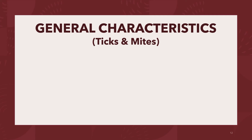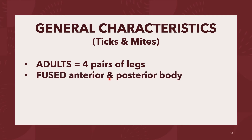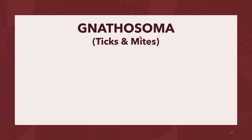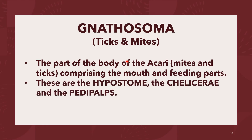For the general characteristics of ticks and mites, adults are characterized by having four pairs of legs and a fused anterior and posterior body that appears to lack segmentation. The body part that comprises the mouth and feeding parts is known as the gnathosoma. The word gnathosoma comes from the Greek 'gnathos,' meaning jaw, and 'soma,' meaning body. It is also known as the capitulum, and it is comprised of the hypostome, the chelicerae, and the pedipalps.